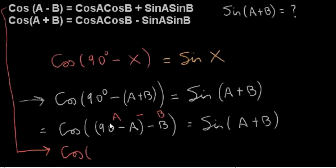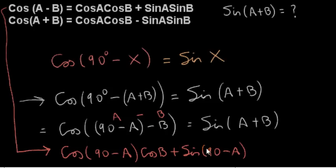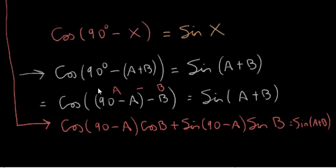We can now apply the top cosine identity again to this expression. This time A is 90 minus A, and B is just B. So we get cosine of (90 minus A) times cosine of B, plus sine of (90 minus A) times sine of B. Applying the result we just proved, cosine of 90 minus A equals sine of A. So we get sine of A times cosine of B. And sine of 90 minus A is cosine of A, multiplied by sine of B.